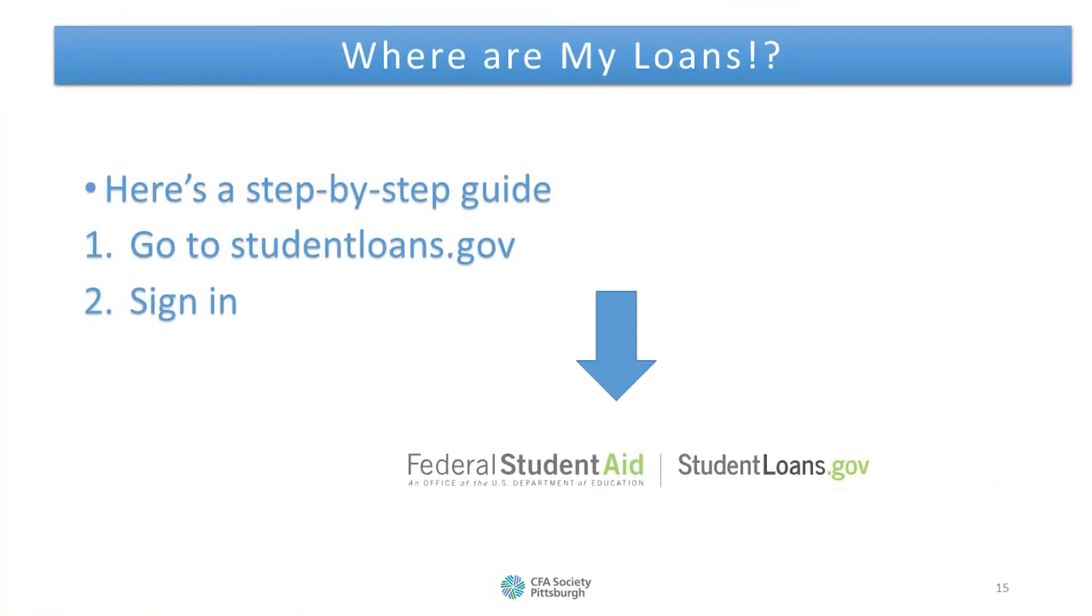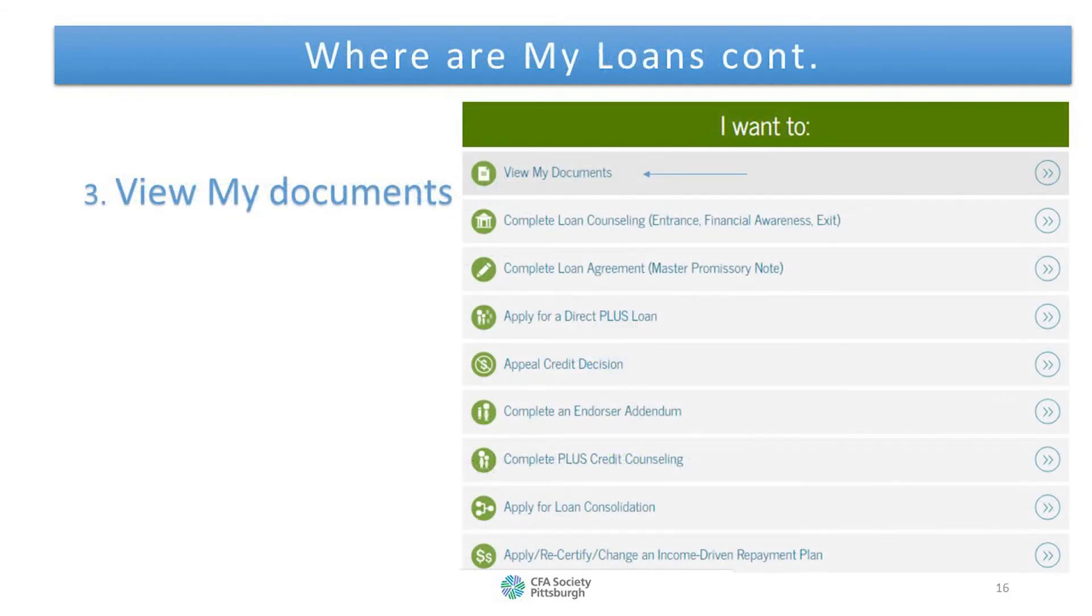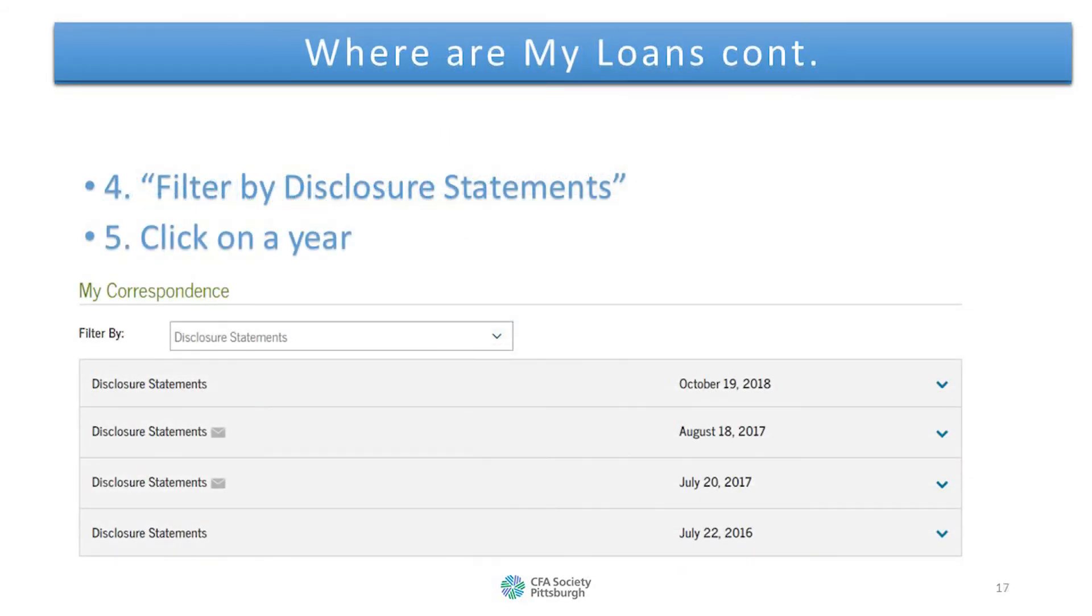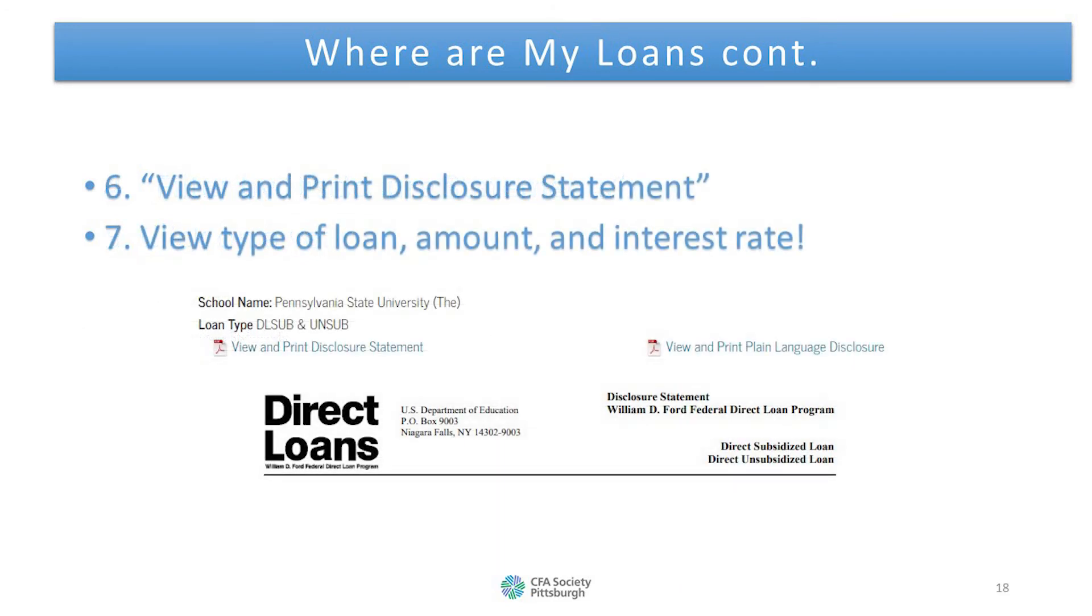First, you would want to go to studentloans.gov and sign in with your username and password that you created when you started the program. You would want to view my documents. You would want to filter by disclosure statements and click on the most recent year for the filing date. Next, view and print the disclosure statement. If you can't print it, you can save it to your laptop or flash drive. This will show you what type of loan you have, the amount, and the interest rate that will accrue after college, such as whether they are direct subsidized loans or unsubsidized loans.